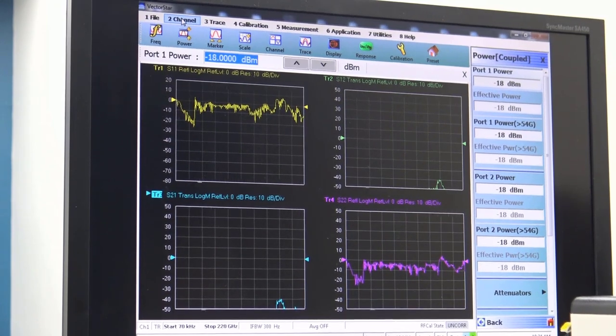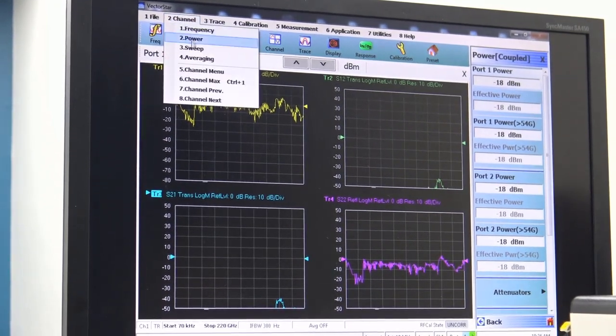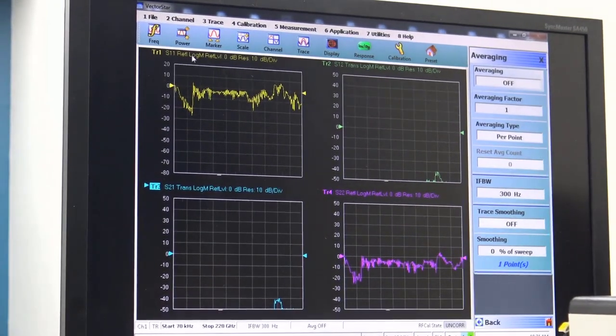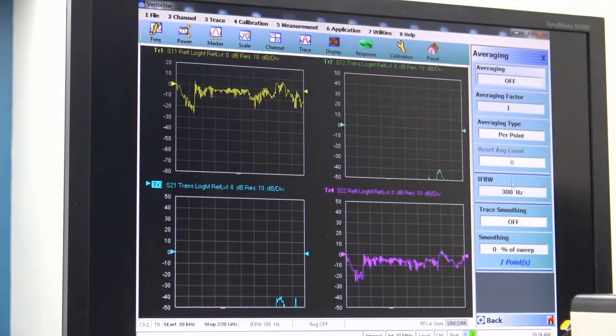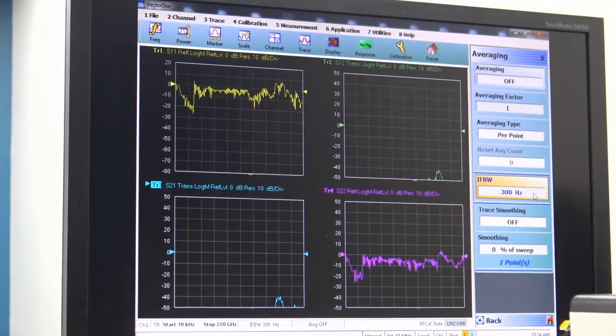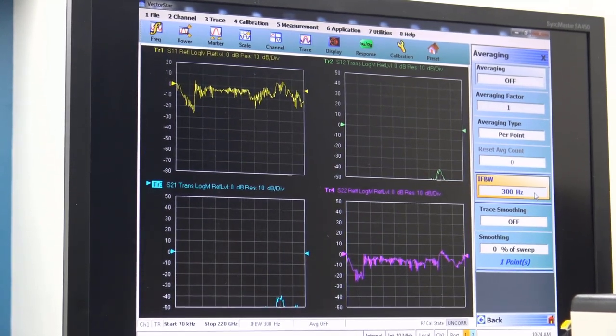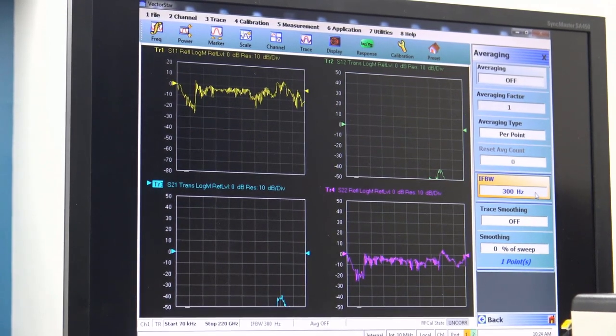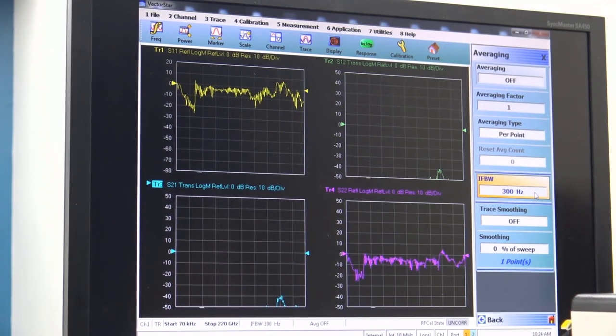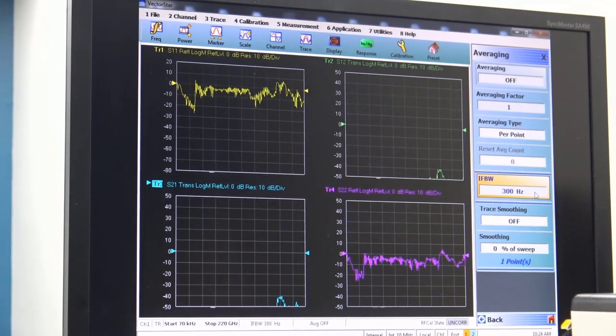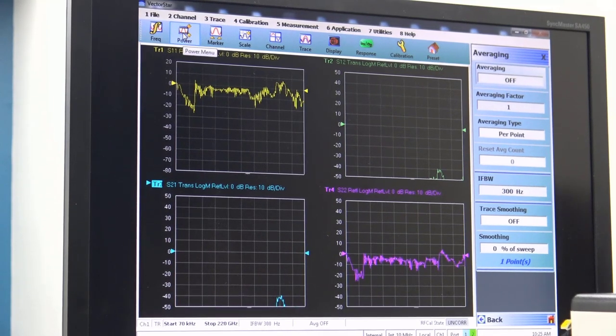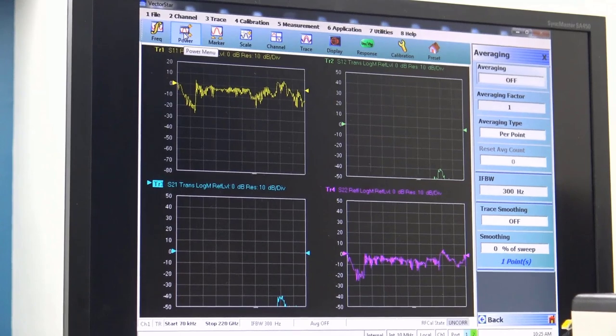Then the final thing we'd want to do is go to our channel menu, select averaging, and verify the IF bandwidth is about where we would want it to be. In this case, I have it set for 300 Hz. You can set it for whatever bandwidth that you want depending on how low of a power level and the dynamic range that you're looking for. So that sets up our frequency, power, and averaging.